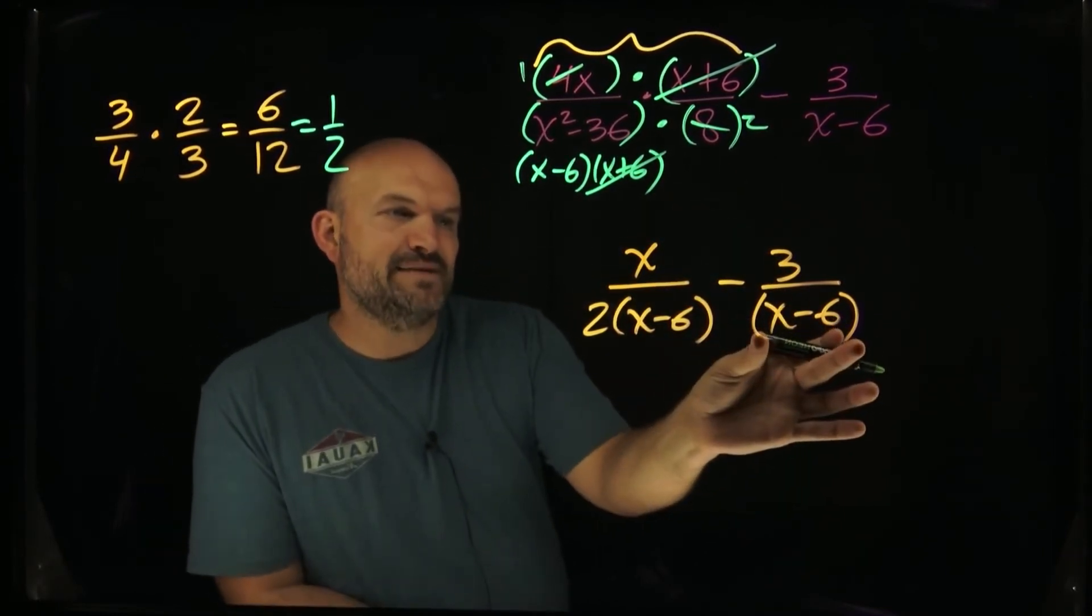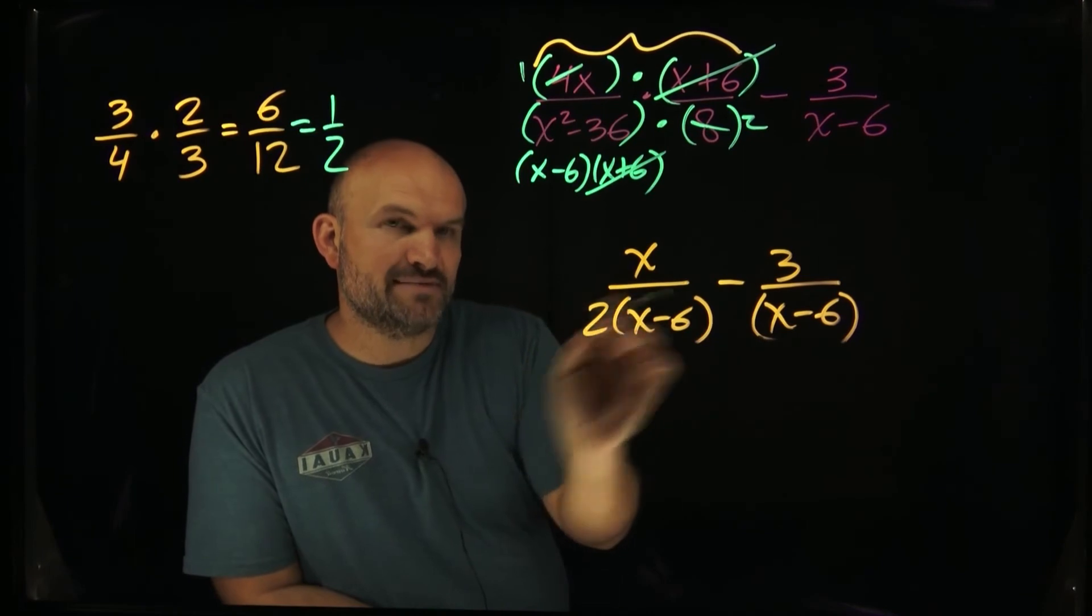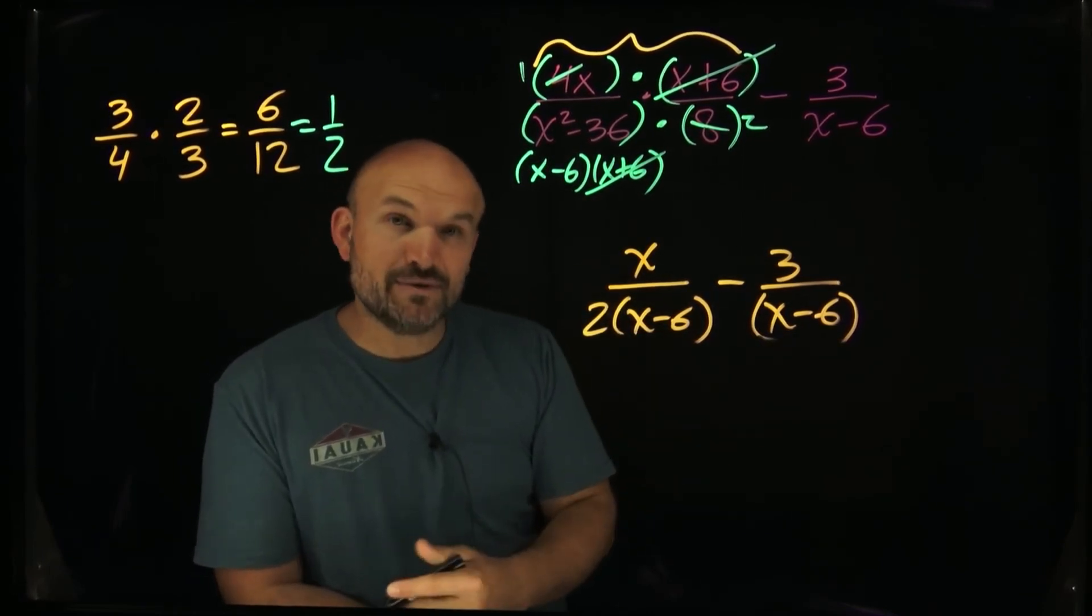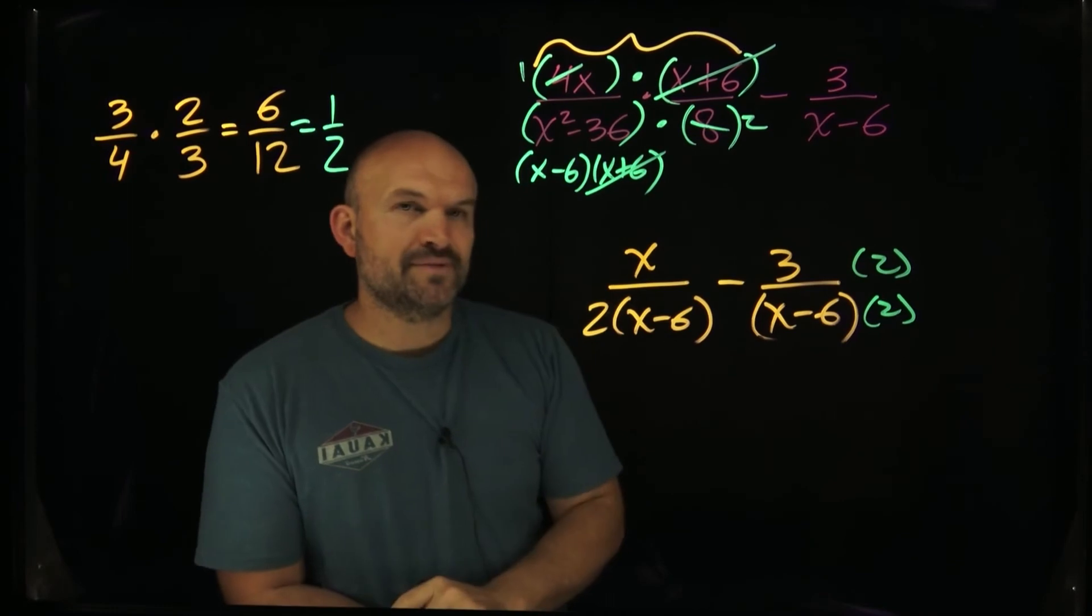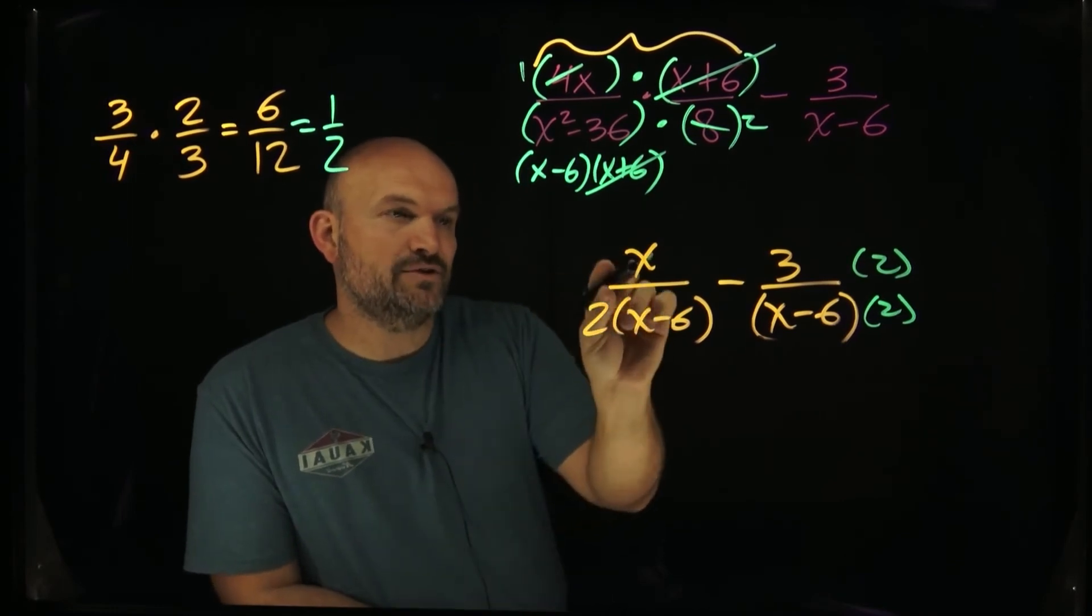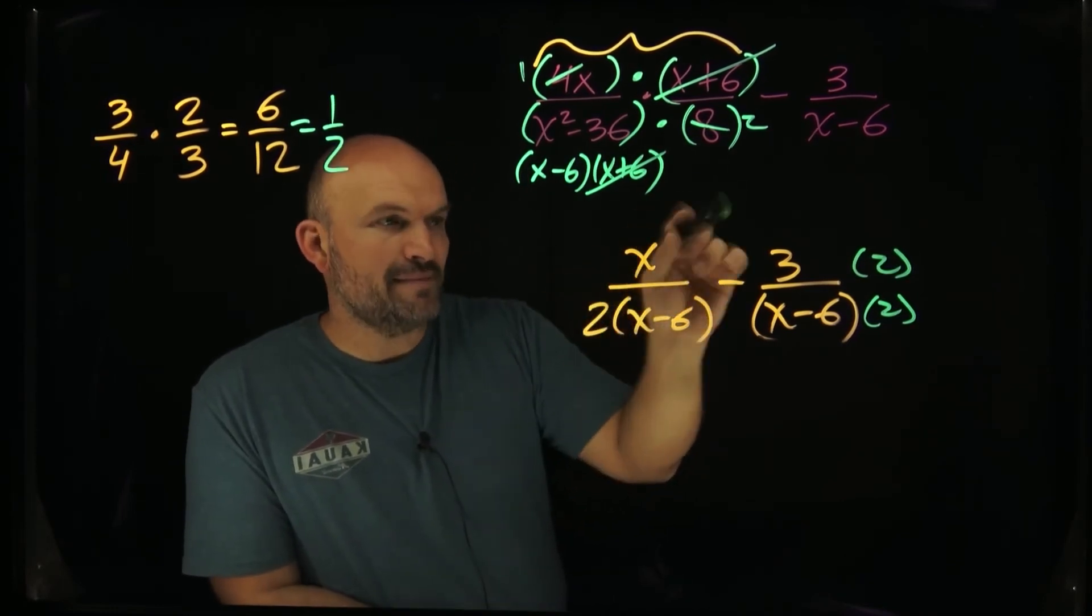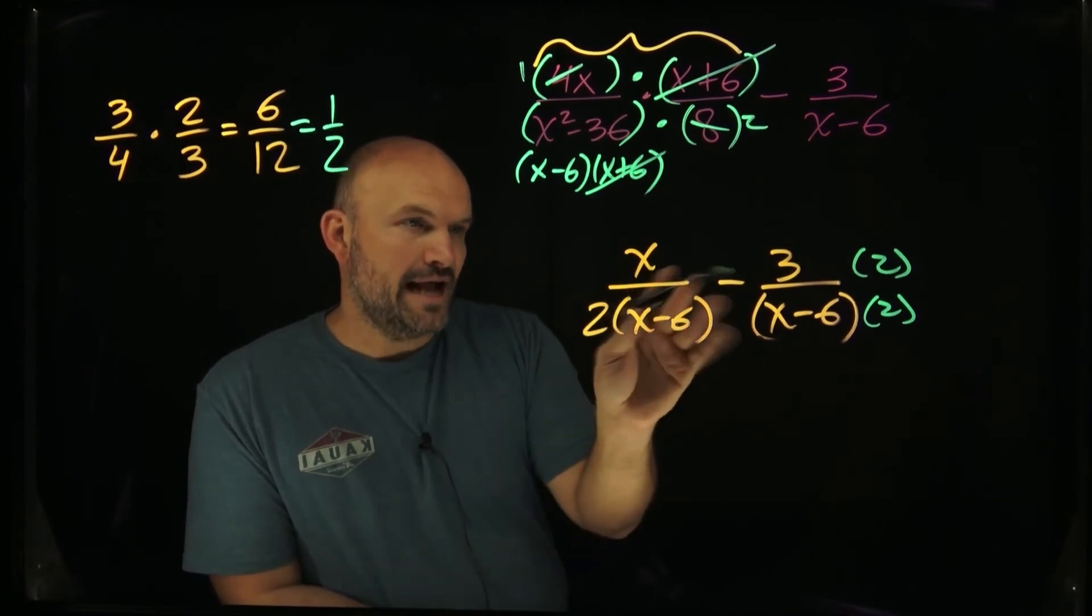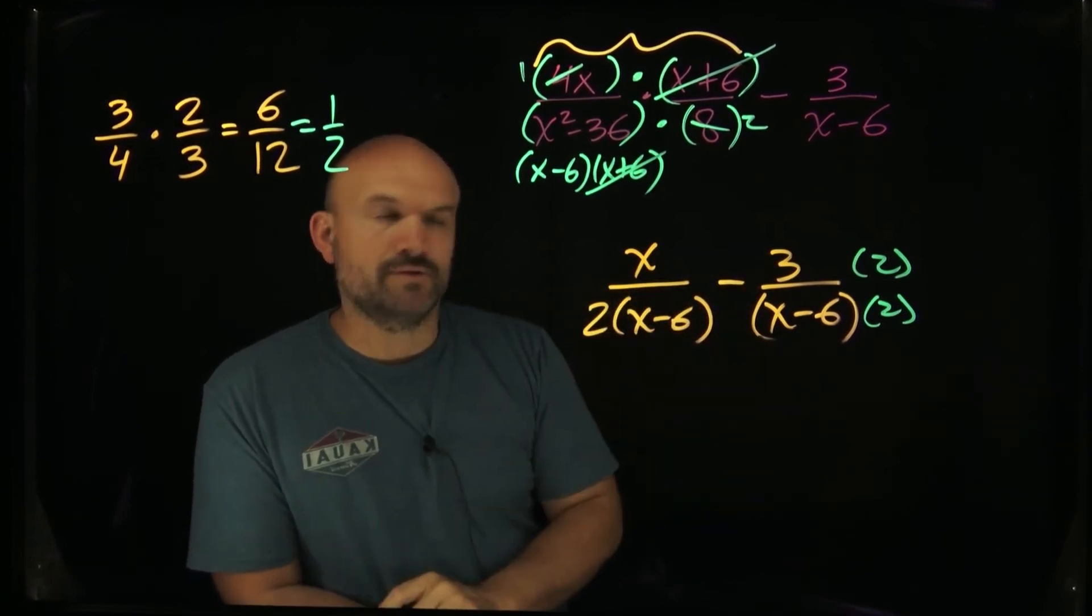So here I have x minus 6. Here I have 2 times x minus 6. So to get these to be common denominators, what I'm going to need to do is multiply by 2. Now what you can see I have is going to be x minus 6 in this case. And therefore, I can keep that all over my common denominator.